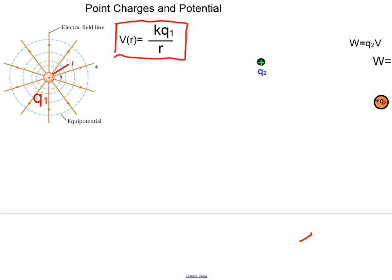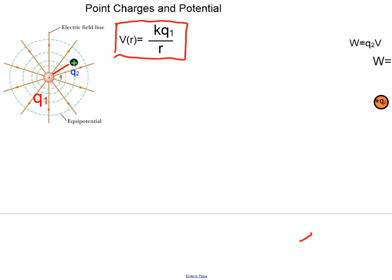Around the central charge q1 there are circular equipotential lines — places where the potential is the same, given by the equation V = kq/r. At particular values of r, the potential is the same all along each circle, but different between circles. This equation tells you the amount of work you have to do to bring another charge q2 from infinity and place it at distance r. That work per coulomb is V, so the total work W1 = q2 × V1.